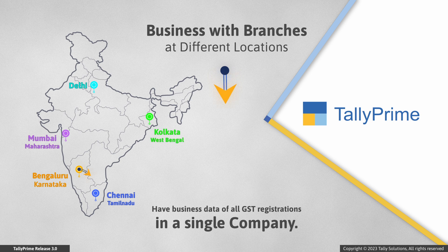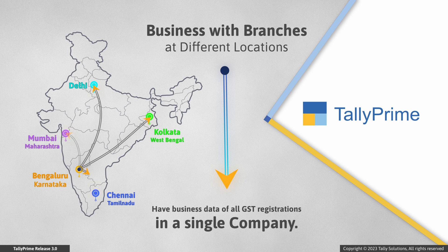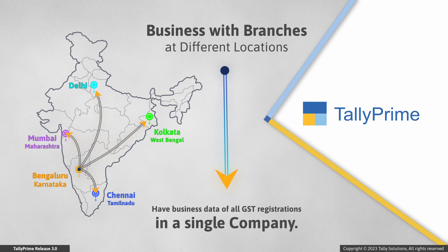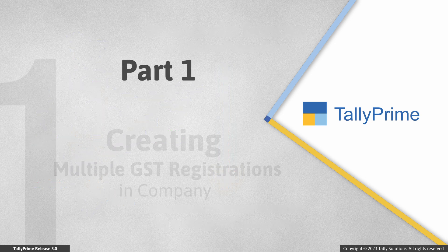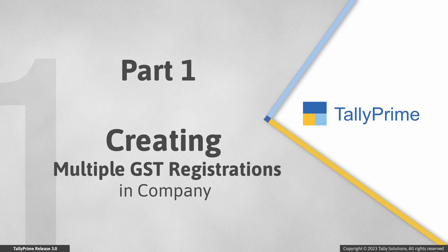If your business has branches at different locations with separate GST registrations, then you can create multiple GST registrations in a single company in Tally Prime Release 3.0 and later releases. This helps you to maintain a single company data in which you can record transactions and view reports for all your GST registrations. First, let us see how to add multiple GST registrations to your company.